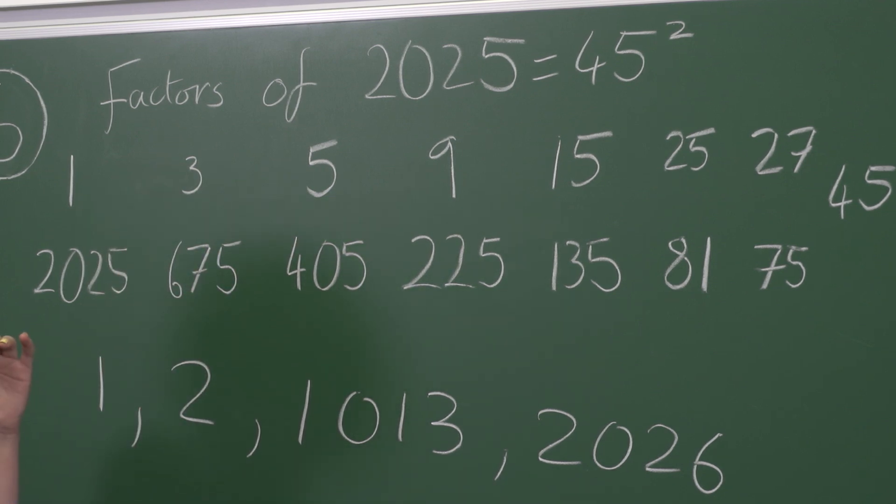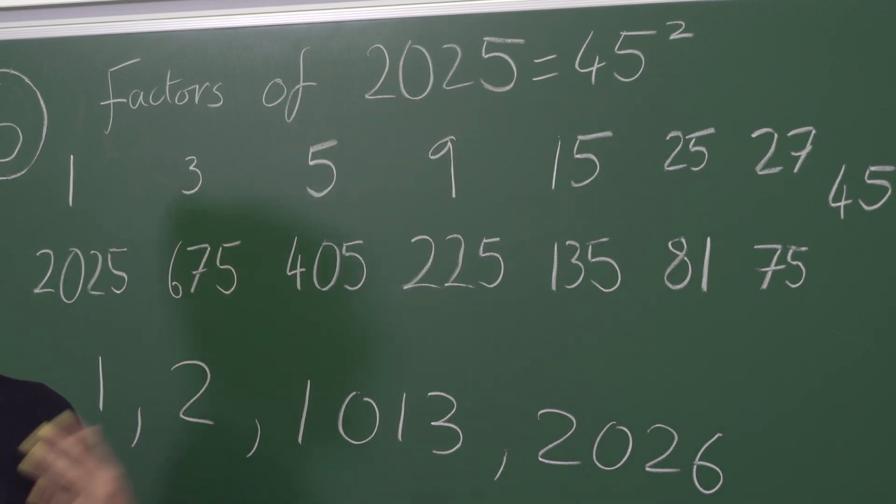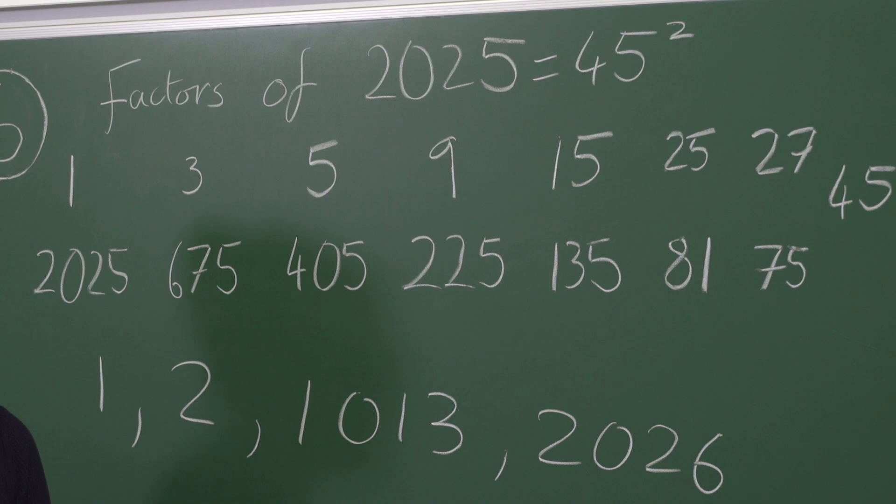Since we know that any odd number squared is going to have factors which sum to an odd number, we also know that 2 times any odd number squared will also have factors which sum to an odd number.